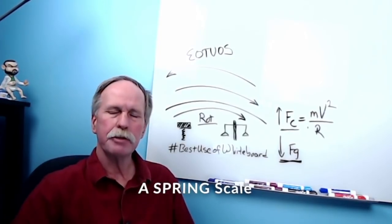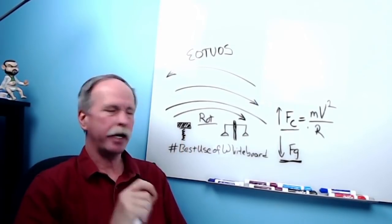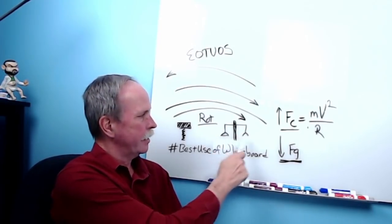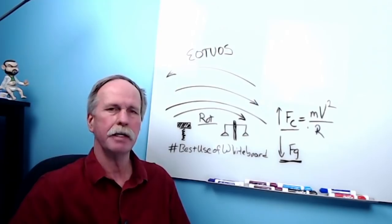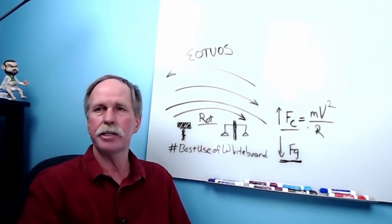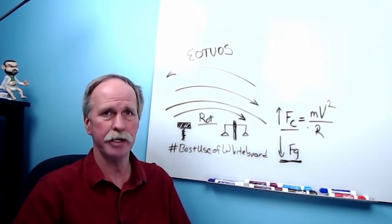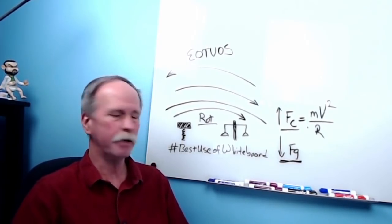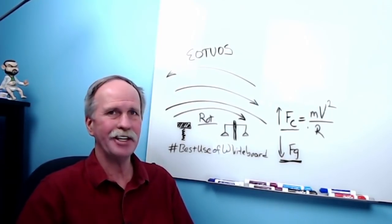The reason it works with a spring scale is that it measures by compressing a spring. On a beam balance, both the reference weight and the object being weighed are affected equally, so you won't see a difference. That's why spring scales need to be calibrated based on latitude, but beam balances do not — and why precious metals are measured using beam balances, not spring scales. This is Bob the Science Guy signing out from Northern Michigan. Thanks for stopping by, remember hashtag best use of whiteboard, hit like and subscribe, and I'll see you again soon.